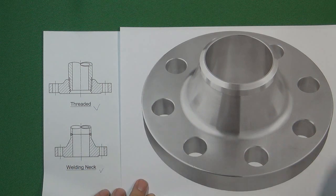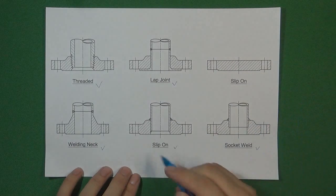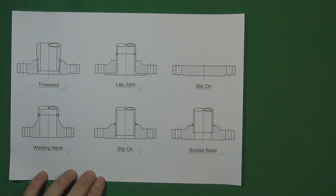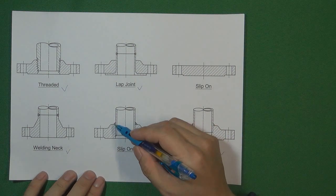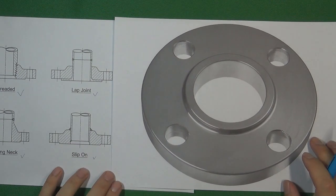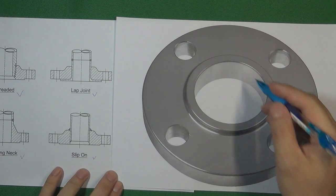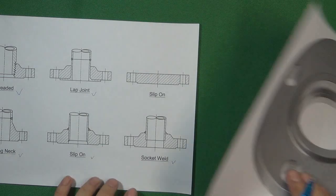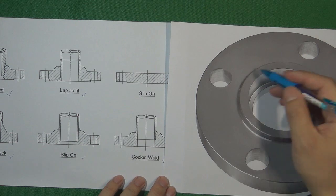Besides weld neck, we have another two kinds of welding connections. One is called slip-on, and another is called socket weld. The basic principle is the same — we put the pipe inside the flange and weld two pieces together. For slip-on, we put the pipe inside the flange and weld. For socket weld, we put the pipe inside the hole and weld two pieces together.